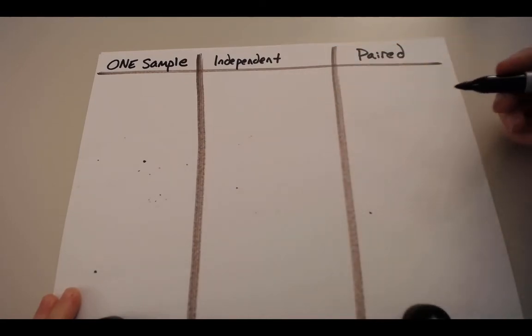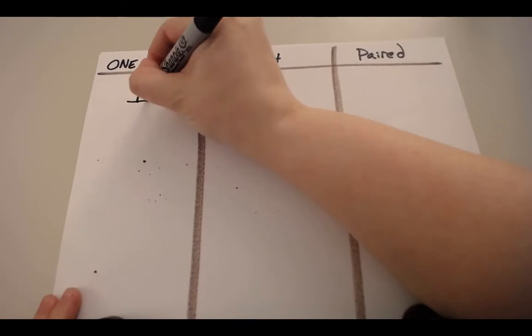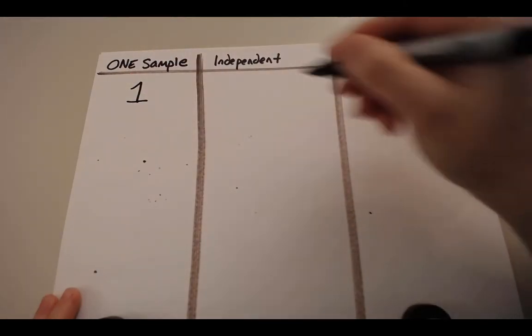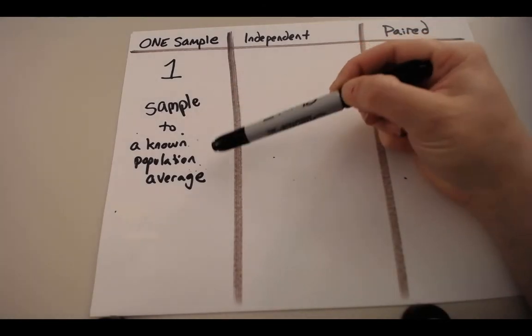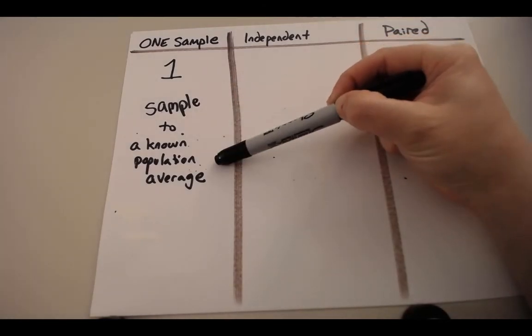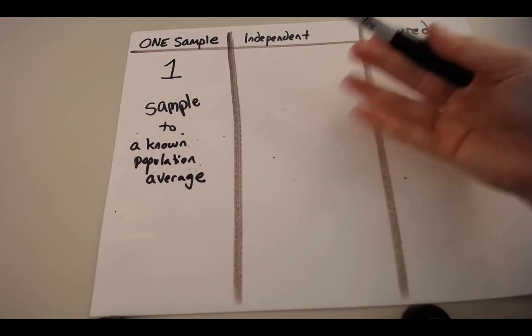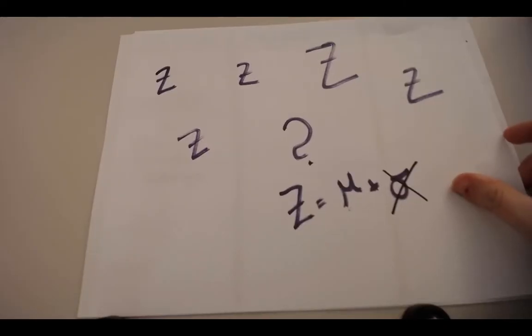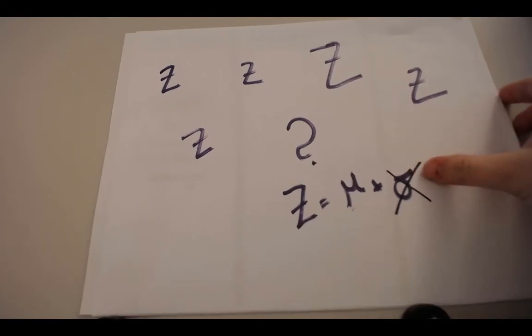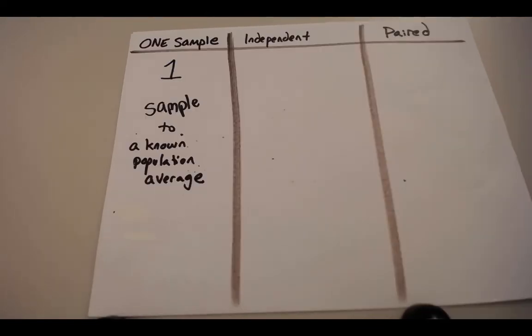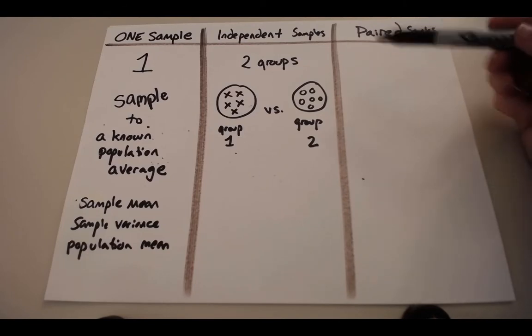In a one-sample t-test, you have one sample, hence the name. And what you're doing is you're comparing that one sample to a known population average. Why don't you just use a z-score? Well, because you don't know the population variance. We're going to use the sample variance instead. We will get more into this later, but spoilers alert.